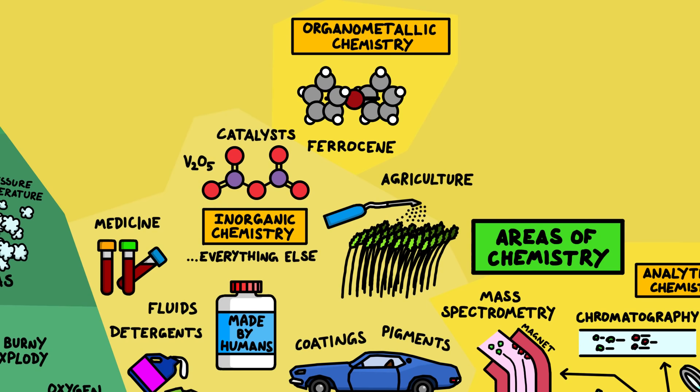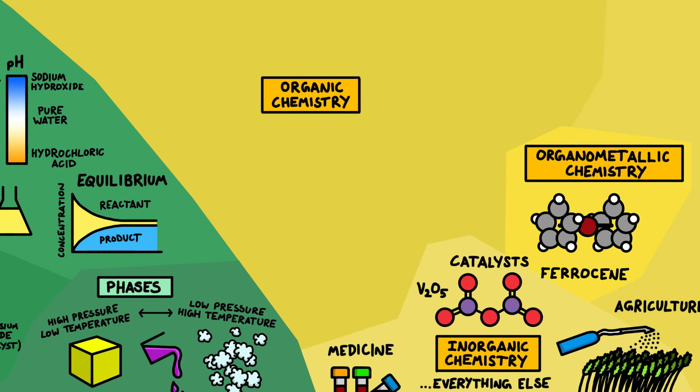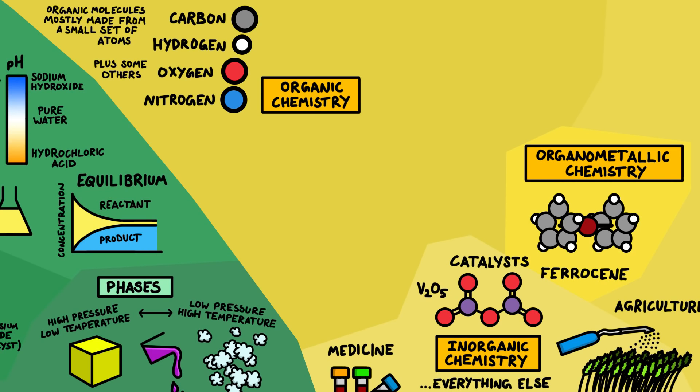Organic chemistry looks at the structure and behavior of the molecules of life, which are typically built from a small set of different atoms: carbon, hydrogen, oxygen and nitrogen, plus a few others. Organic chemists also look at making new organic compounds with useful properties.